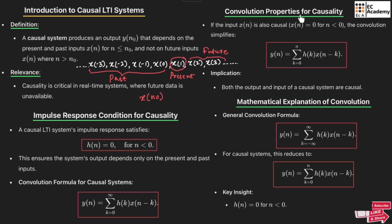Now let us understand convolution properties for causality. If the input x(n) is also causal — meaning x(n) = 0 for n < 0 — the convolution simplifies to y(n) = Σ(k=0 to n) h(k)·x(n−k). This is the convolution formula for causal input, and for this condition, both the output and input of causal systems are causal.